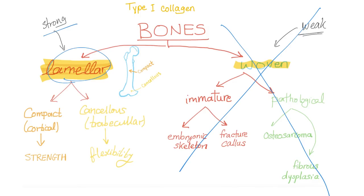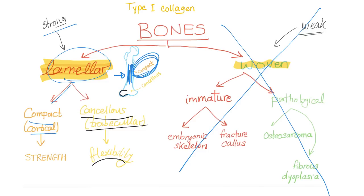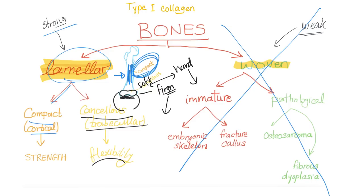The lamellar bone is strong. We have two types: compact or cortical bone, which provides strength and is located in the most weight-bearing area of the bone; and cancellous or trabecular bone, which provides flexibility and is found at the ends where it comes in contact with the firm cartilage to form joints. Cartilage is firm — somewhere between soft and hard.